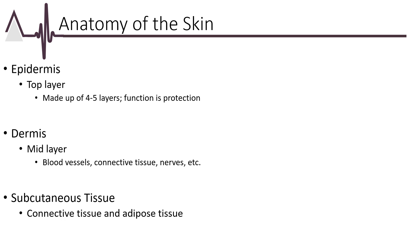Locate the anatomy of the skin in the integumentary table of contents. Understanding the layers of the skin is important as depth is one of the concepts that applies when coding from the integumentary section. The epidermis is the top layer of skin made up of four to five layers, and its main job is protection. The dermis is the mid-layer of skin just below the epidermis and is comprised of blood vessels, connective tissue, nerves, lymph vessels, sweat glands, and hair shafts. The subcutaneous tissue is found just below the dermis and, although it is technically not a layer of skin, it lies just beneath the skin and is made up of connective and adipose tissue.